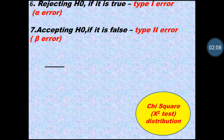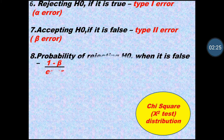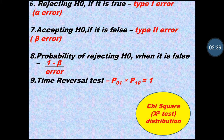Next, if rejecting the null hypothesis when it is true, that is Type I error, also denoted by alpha error. Accepting the null hypothesis when it is false is Type II error, denoted by beta error. The probability of rejecting the null hypothesis when it is false is 1 minus beta, known as the power of the test.